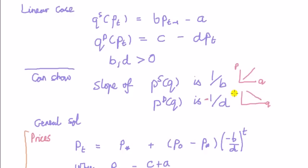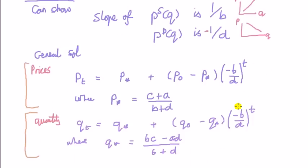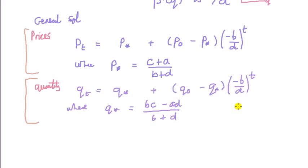Next, I present the general solution without proof, because in this applied course we just need to know how to use it. The general solution for the price is equal to the time independent solution, that's p star, in other words the equilibrium price, plus p zero, the initial price, minus the equilibrium price, times by minus b over d, where both b and d are positive. So in other words, this is always going to be minus a positive number to the power of t, time.